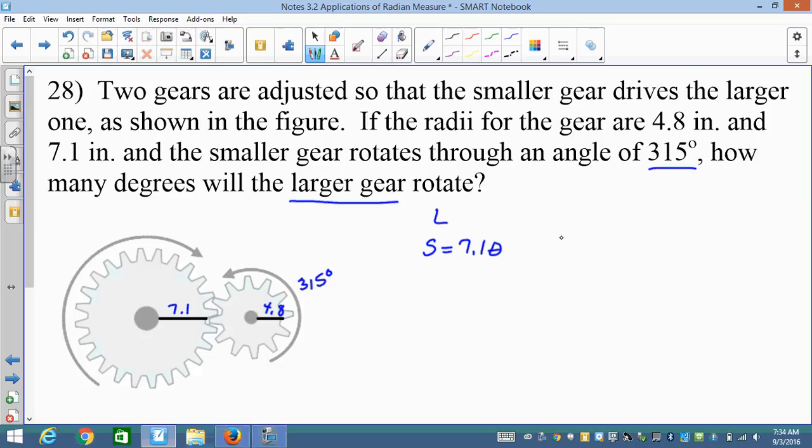Remember, convert to radians, pi over 180, to get back to degrees, 180 over pi. So we're not even going to mess with it. We'll convert for y. And the smaller one gives us S equals 4.8 times 315 degrees.